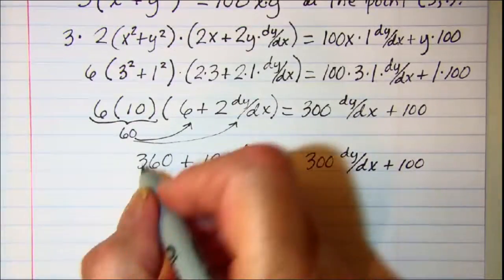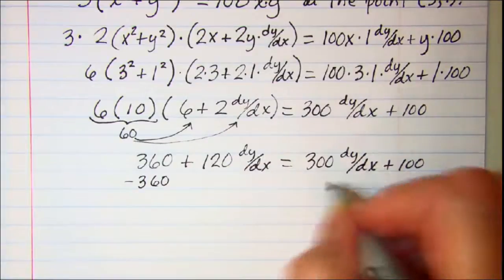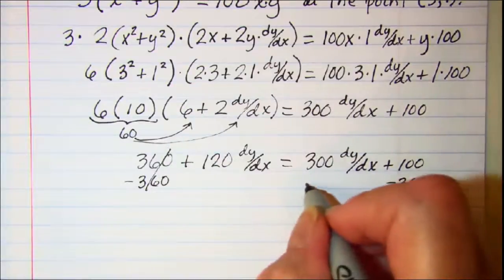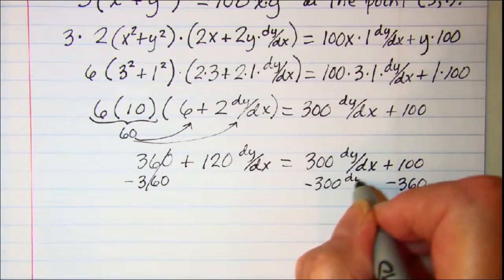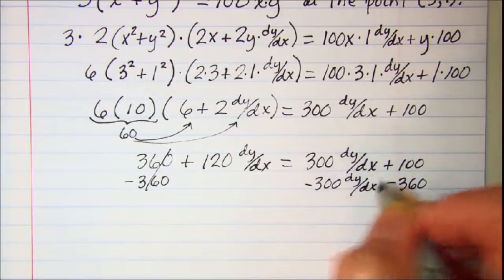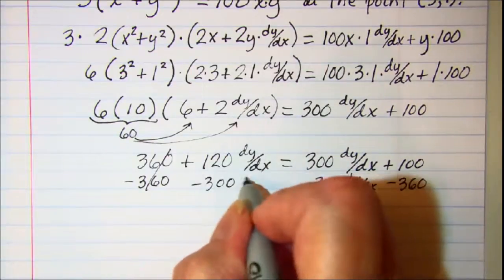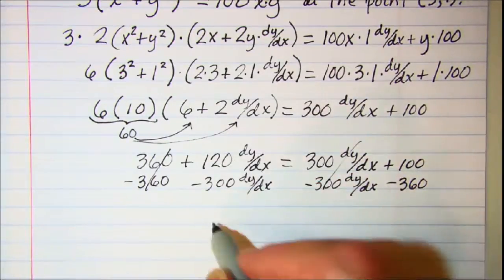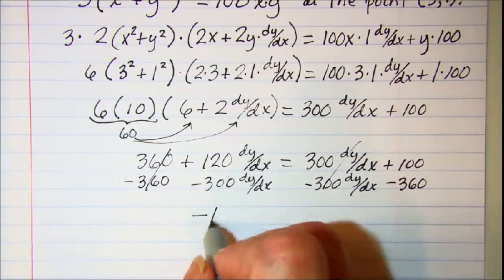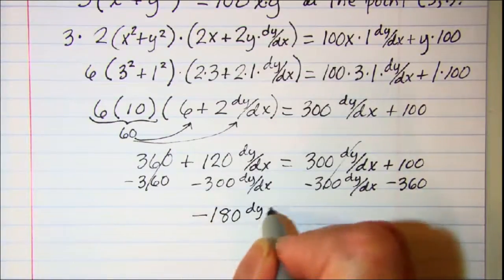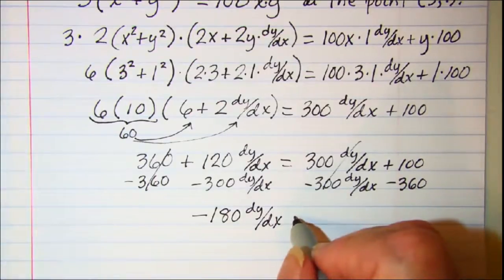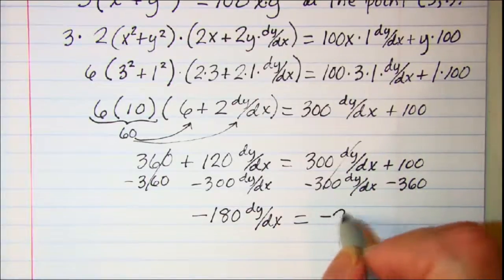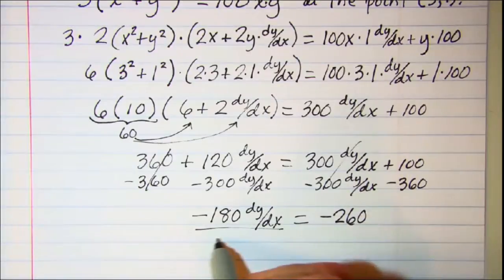Subtract 360 from both sides. These will cancel and then subtract 300 dy dx from both sides and these will cancel. So I end up with negative 180 dy dx equals negative 260. Divide both sides by negative 180.